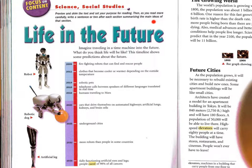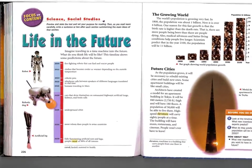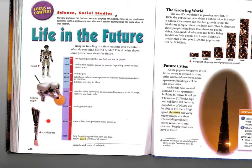You may show your notes on notebook paper attached to your packet, or on the blank page if you have room. You also have one worksheet page that has you practice summarizing. Now let's look at the article — preview and skim it. I see an interesting timeline. Here's 2009 when this book was written. By 2011: firefighting robots that can find and rescue people; clothes that become cooler or warmer depending on outside temperature; robotic pets; telephone calls between speakers of different languages translated in real time — that's actually possible now.